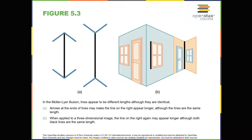Our perceptions can also be affected by our beliefs, values, prejudices, expectations, and life experiences. Individuals deprived of binocular vision during critical developmental periods have trouble perceiving depth. Shared cultural experiences also have pronounced effects on perception. Marshall Siegel, Donald Campbell, and Melville Herskovitz published results of a multinational study demonstrating that individuals from Western cultures were more prone to experience certain visual illusions — such as the Mueller-Lyer illusion shown in figure 5.3, where lines appear to be different lengths but are actually the same length.